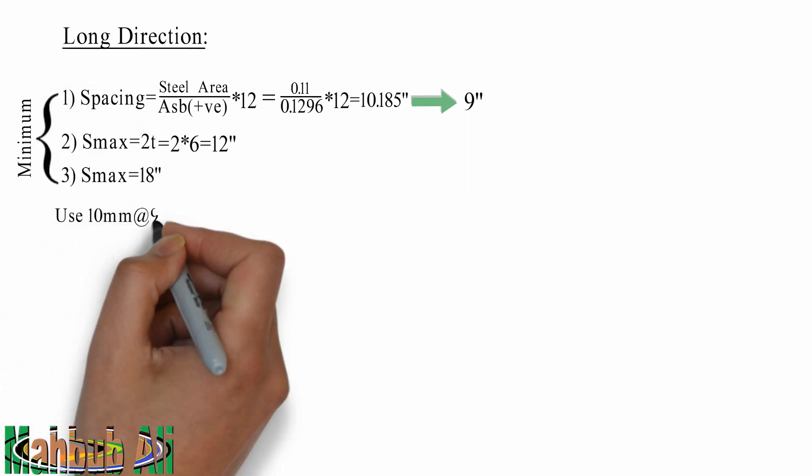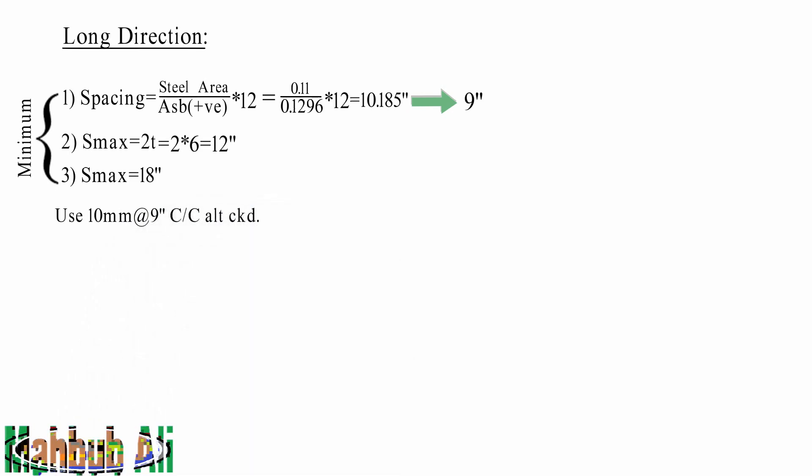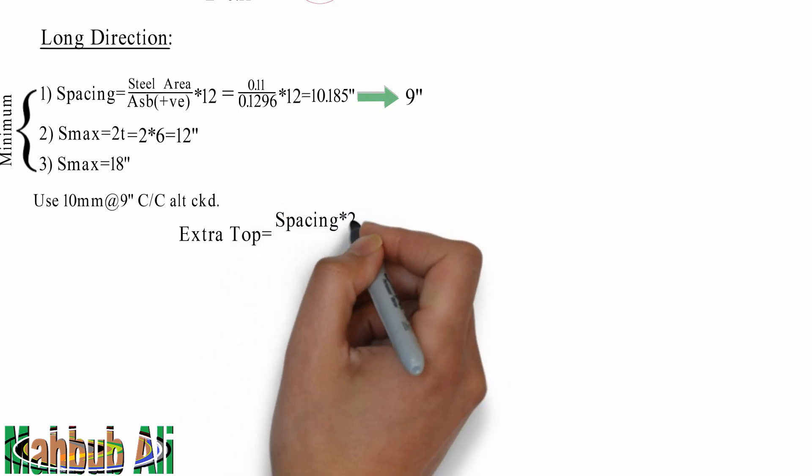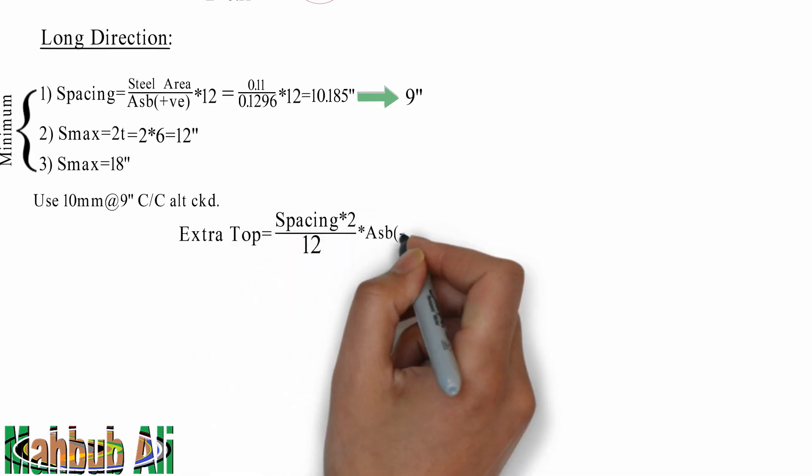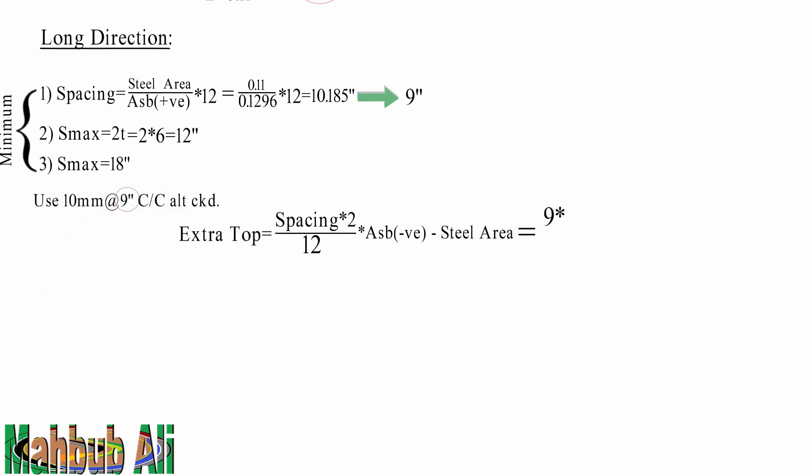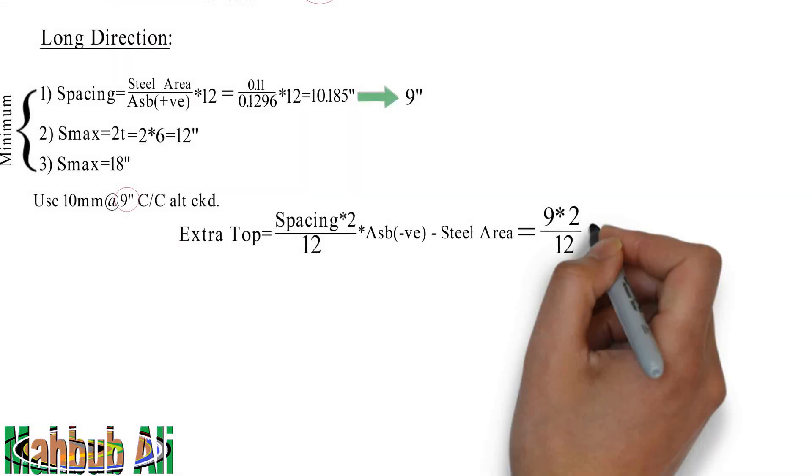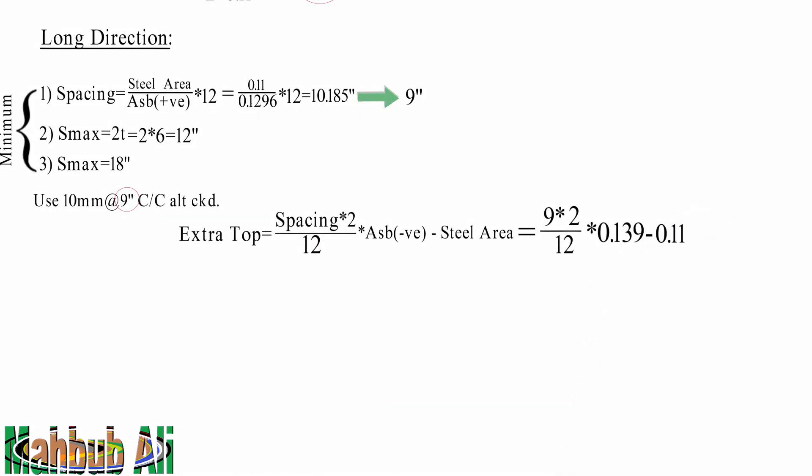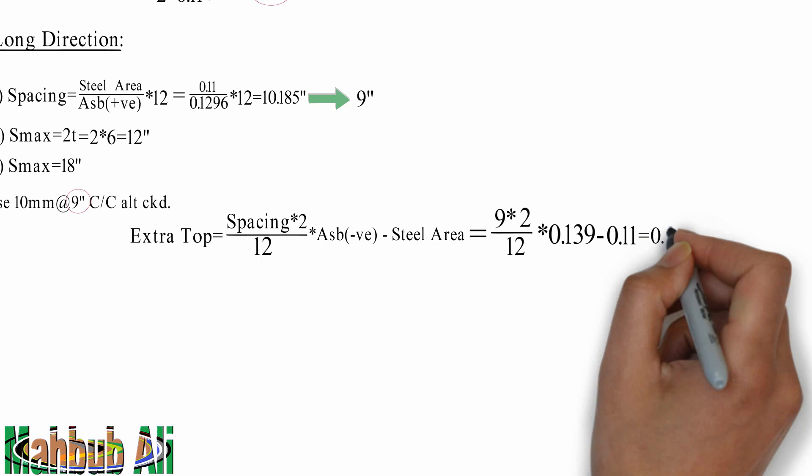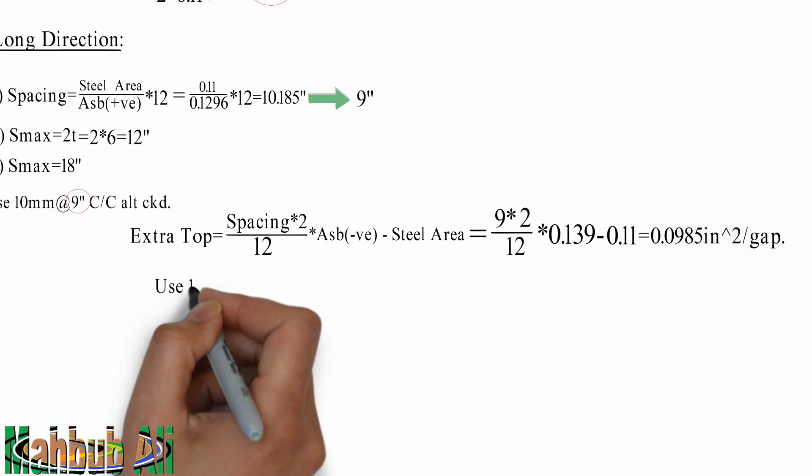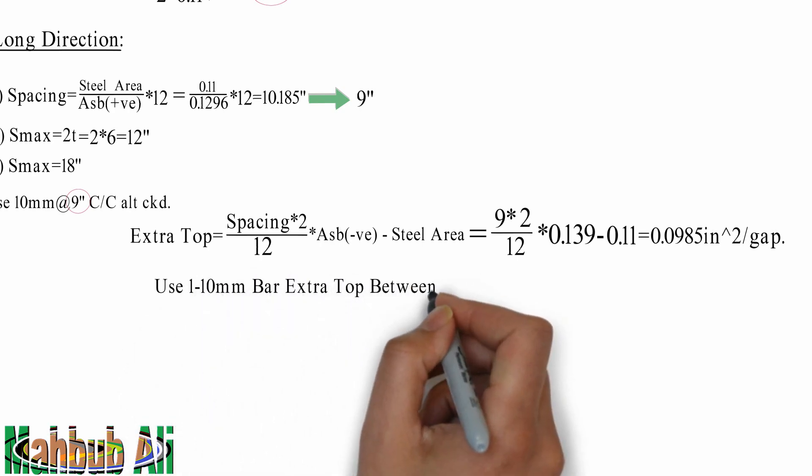Use 10 millimeter bar at 9 inch center to center alternative crank. Use 1 ita 10mm bar extra top between 2 crank.